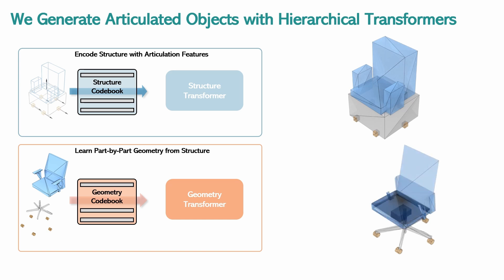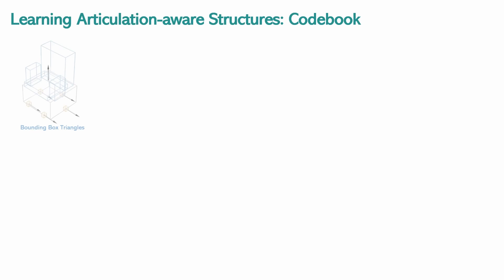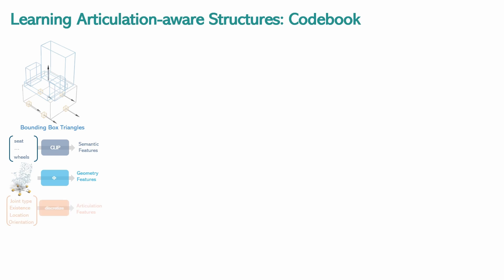Once trained, MeshArt generates objects part-by-part, forming a complete articulated object with clean, sharp geometry. For coherent generation, we parametrize both structure and geometry synthesis by generating sequences of triangles. Object structure is characterized by the part-bounding box triangles, where each triangle is grounded with part semantics, geometry features, and articulation information.